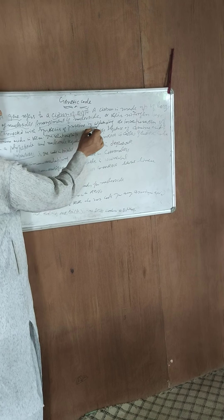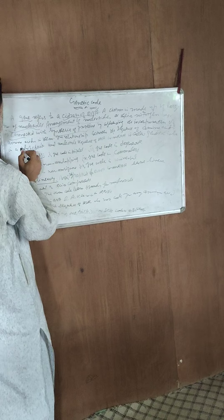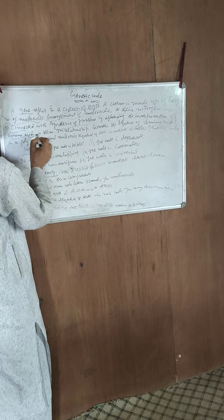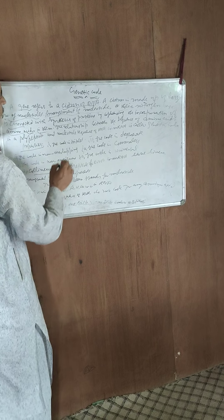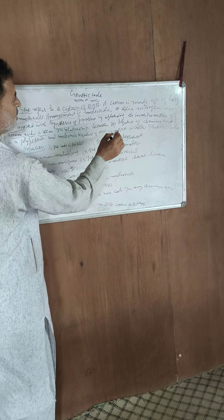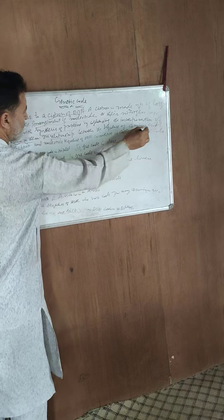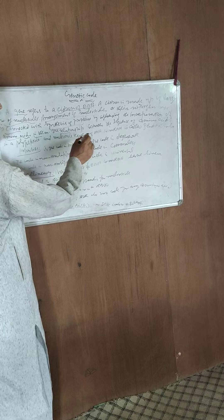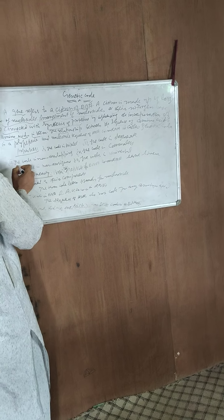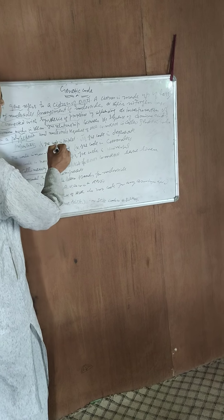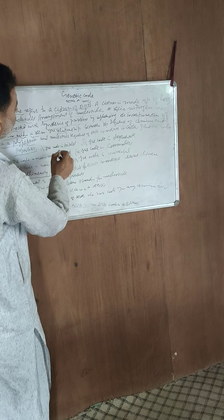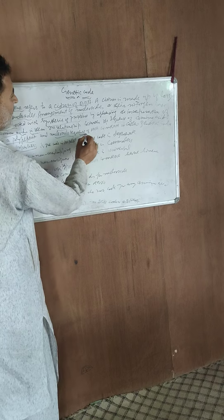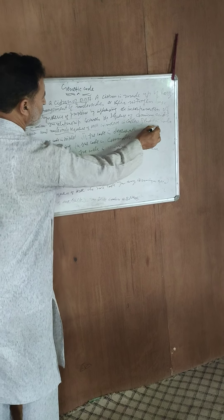By influencing the incorporation of amino acids in the DNA, you see the relationship between the sequence of amino acids in your polypeptide and the nucleotide sequence of DNA or mRNA. This is the genetic code.